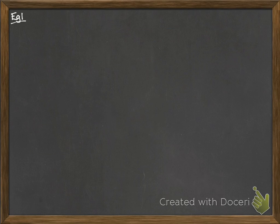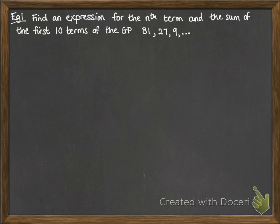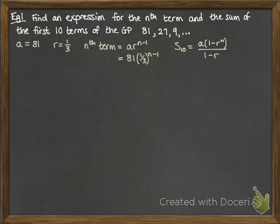So examples. We want to find an expression for the nth term and the sum of the first 10 terms of this GP. Our first term is 81, our common ratio is a third - it's being multiplied by a third to get the next term each time. So our nth term looks like this. And our sum of the first 10 terms, we're going to put the relevant parts into this formula. So, replacing a, r and n, we can work out the sum of the first 10 terms is 121.5.